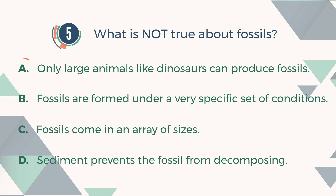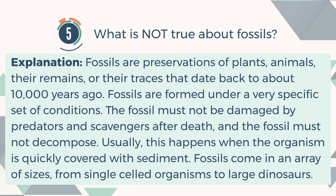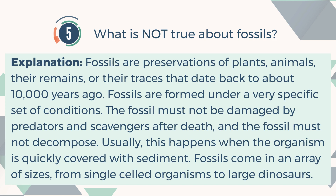The correct answer is A: Only large animals like dinosaurs can produce fossils. Fossils are preservations of plants, animals, their remains, or their traces that date back to about 10,000 years ago. Fossils are formed under a very specific set of conditions — the fossil must not be damaged by predators and scavengers after death, and must not decompose. Usually this happens when the organism is quickly covered with sediment. Fossils come in an array of sizes, from single-celled organisms to large dinosaurs.